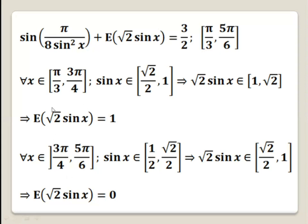For the second interval, for every x in 3 pi over 4 to 5 pi over 6, the values of sine x are between one half and square root 2 over 2. Similarly, multiplying by square root 2, we have square root 2 times sine x belonging to radical 2 over 2 and 1. These numbers have an integer part of 0. So for every x in this interval, the integer part of square root 2 times sine x equals 0.